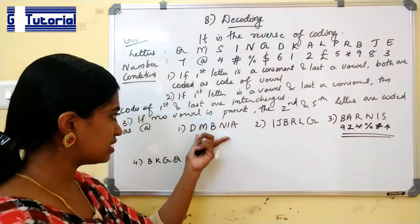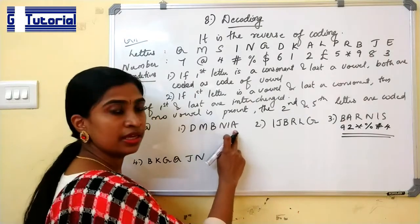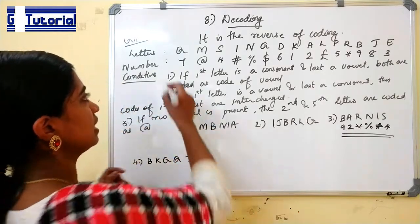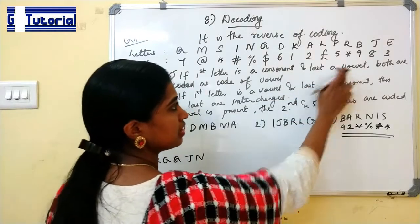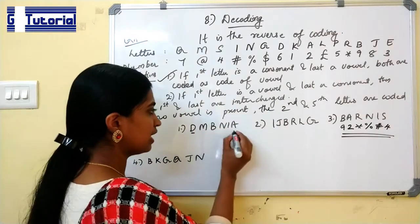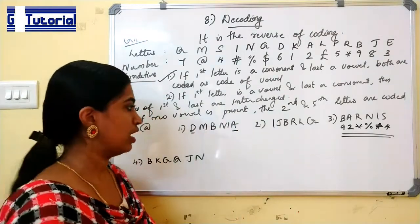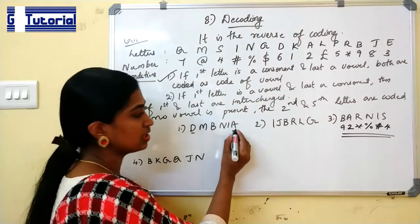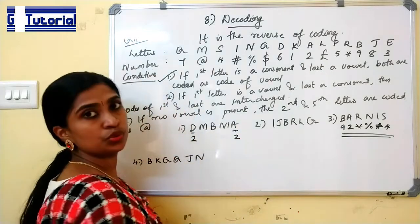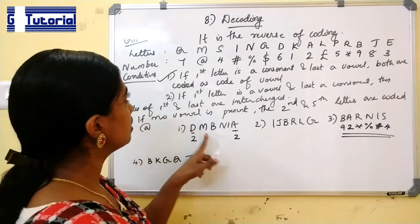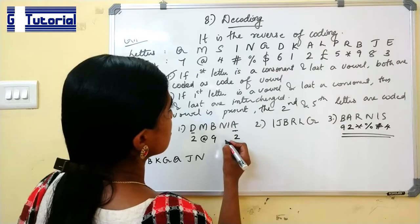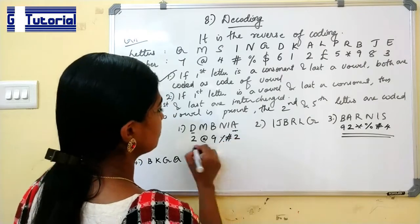Next, we can move on to the first question. DMBNIE. This starts with a consonant and ends in a vowel. So which condition is applicable? First condition. It starts in a consonant and last in a vowel. Both are coded as the code of vowel. That is, this first letter and last letter will be coded as the code of vowel. So D and E. E is a vowel. What is the code for E? 2. So this will be 2 and this will also be 2. That is the condition. Now we will just solve the others. M is coded as 3, B is 9, N is percentage, I is hash.